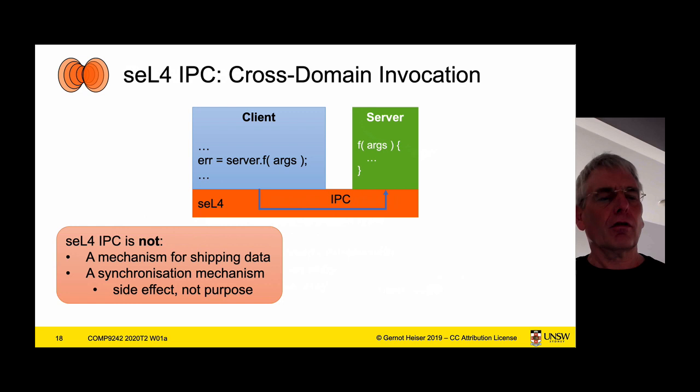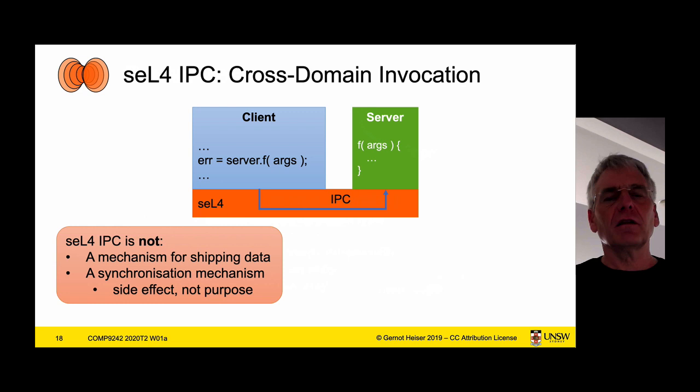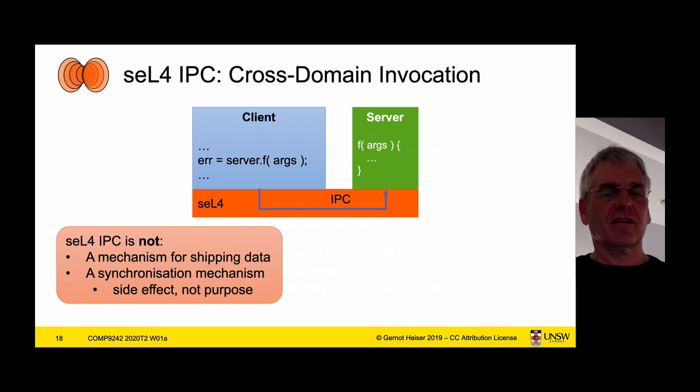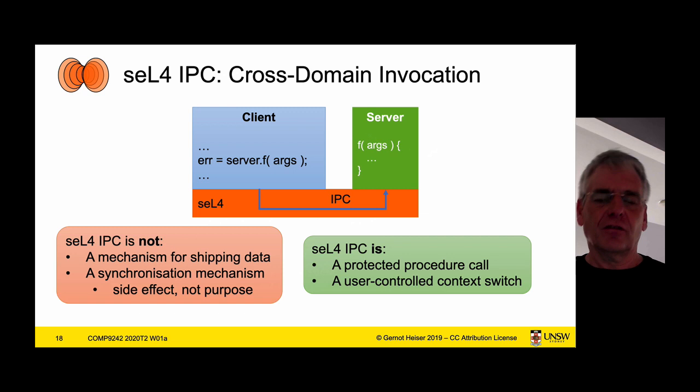Think of SEL4 IPC as a protected procedure call — or as my former student Chuck put it, a user-controlled context switch with benefits. Logically, the client is executing and then switches address space into the server space, continues executing there in a well-defined code path representing the server function, then returns back. While executing in the server, it executes with the server's rights; when it returns, it executes with the original client-side rights. The context switch is from the client's context into the server context under user control, and the benefits are passing arguments back and forth. Don't think of SEL4 IPC as a mechanism for shipping bulk data or as a synchronization mechanism — those are side effects; really think of it as this protected procedure call.